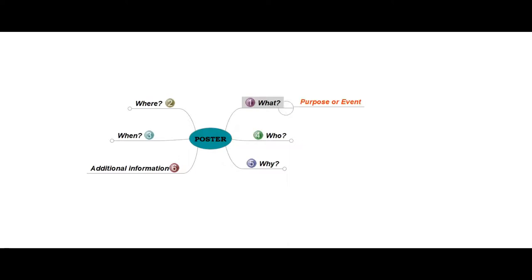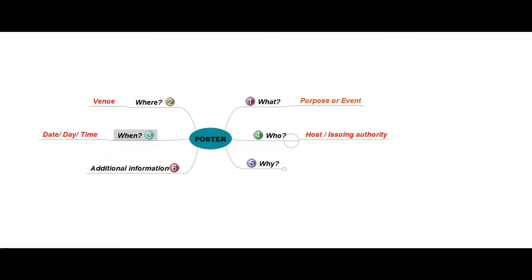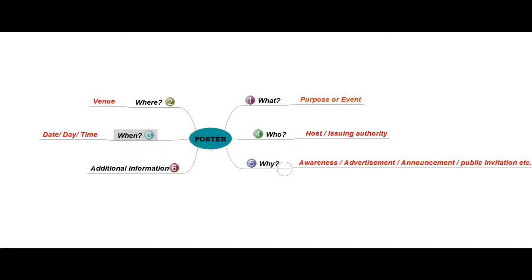While drafting a poster, we have to answer these five questions. What indicates the purpose of the event. Where means location. When indicates date, time, and day. Who means the one who hosts the event or the issuing authority. Why means is it an awareness, advertisement, announcement, or public invitation — what is the purpose of that poster? Apart from this, we can add some additional information required in the poster.